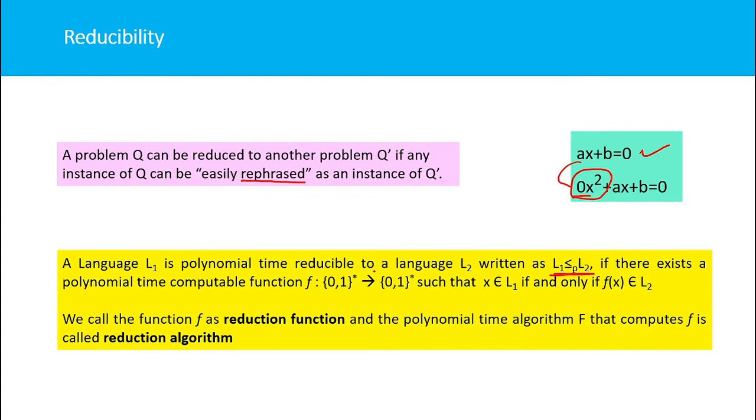If there exists a polynomial time computable function that maps from {0,1}* to {0,1}*, such that x belongs to L₁ if and only if f(x) belongs to L₂.